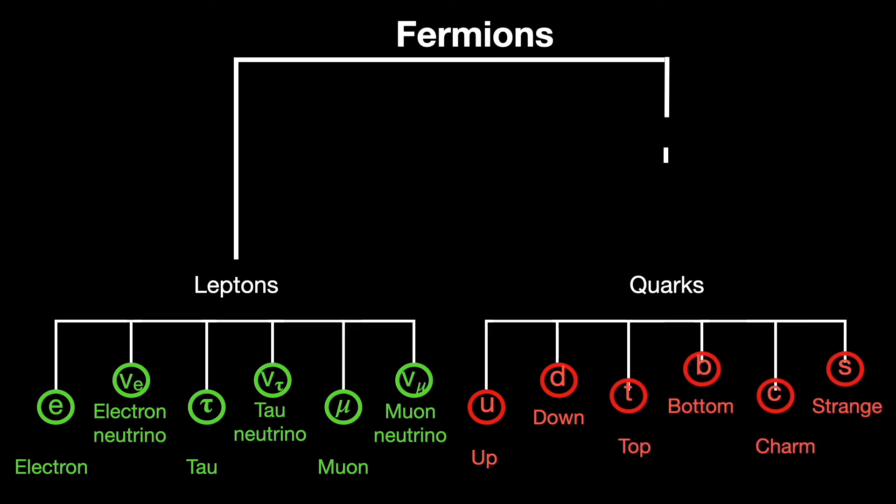The up, charm, and top quarks have a two-thirds positive charge. The down, bottom, and strange each have a minus one-third charge.